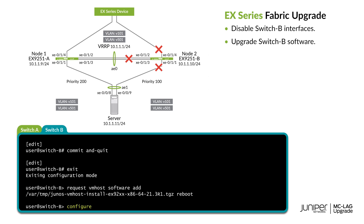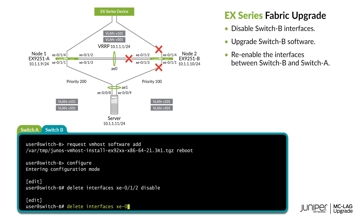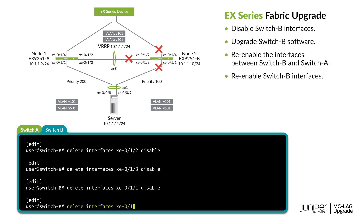The device has rebooted and we've logged back in. We can now re-enable the ICCP and ICL interfaces between the peers. We'll now re-enable the server-facing and uplink interfaces on switch B.